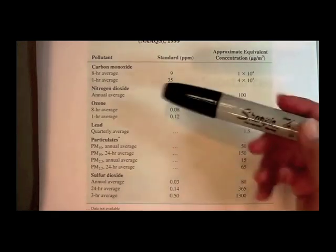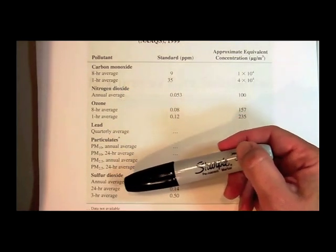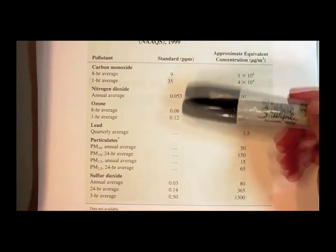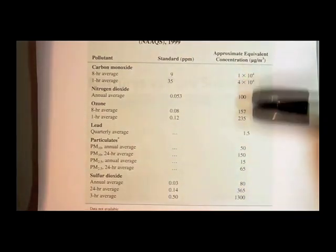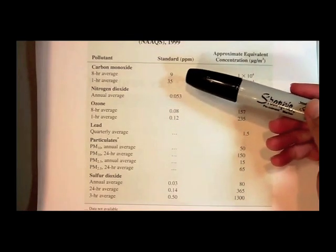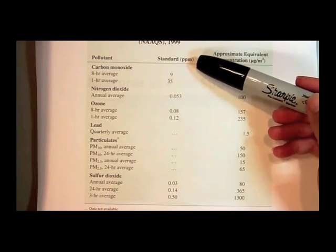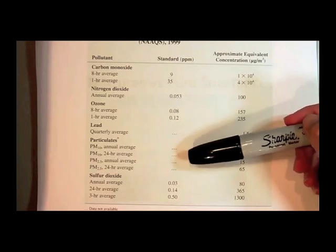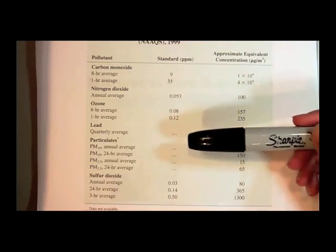Some of the pollutants listed here are carbon monoxide, nitrogen dioxide, ozone, lead, particulates, and sulfur dioxide. The concentrations are given in units of parts per million for most of them, and in units of micrograms per cubic meter for lead and particulates. The reason lead and particulates are not given in parts per million is because parts per million assumes the parts are all in the gas state. Lead exists in air as little bits of solid, and particulates are other undefined bits of solid such as dust, pollen, viruses, and anything else.